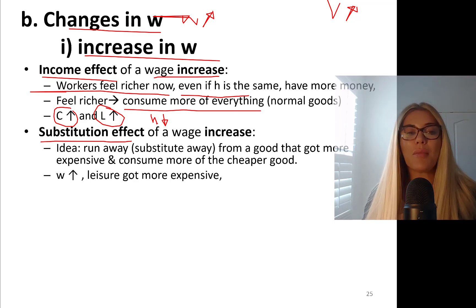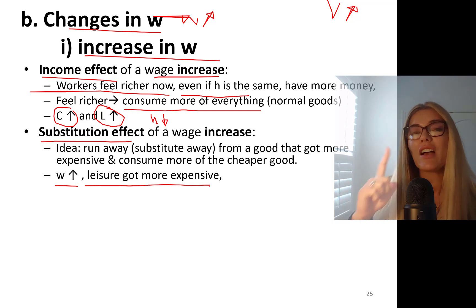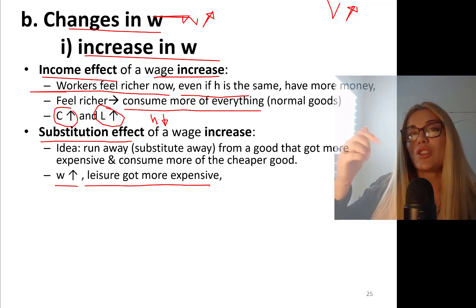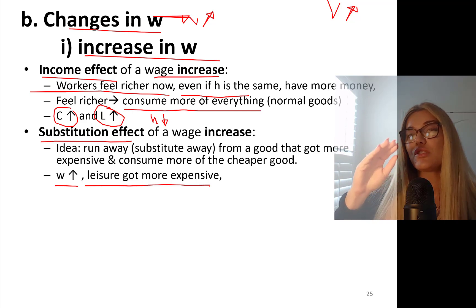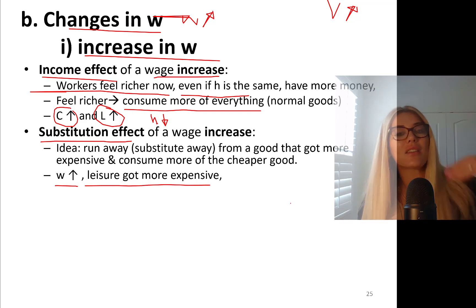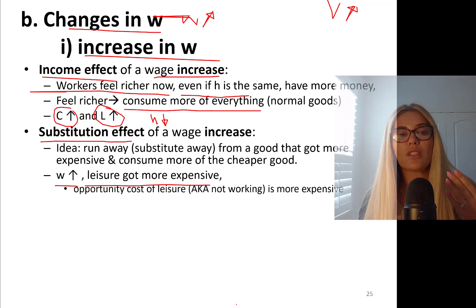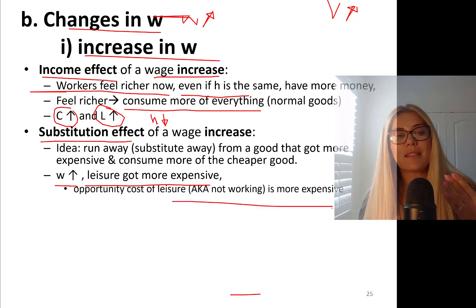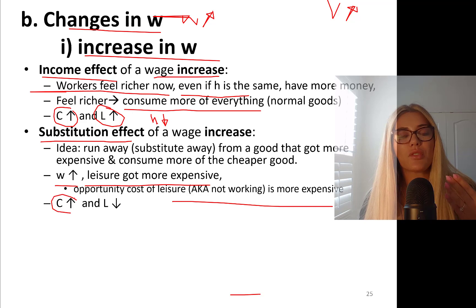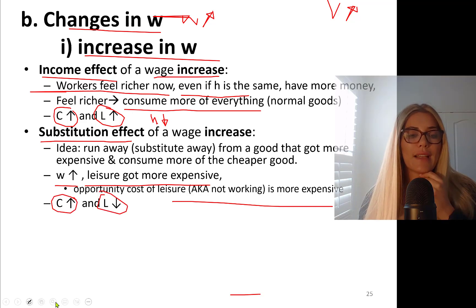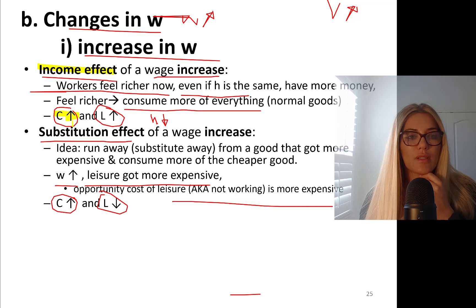If wage rate goes up, wage rate is the price of leisure, so leisure is more expensive. Every hour you don't work and take leisure, you are giving up that wage rate. If your wage goes up from $15 to $40, every hour you don't work you're giving up $25. So leisure got relatively more expensive. Substitution effect says the opportunity cost of leisure — not working — is more expensive. Therefore, consume more consumption goods and consume less leisure. Both income effect and substitution effect agree: consume more consumption goods.